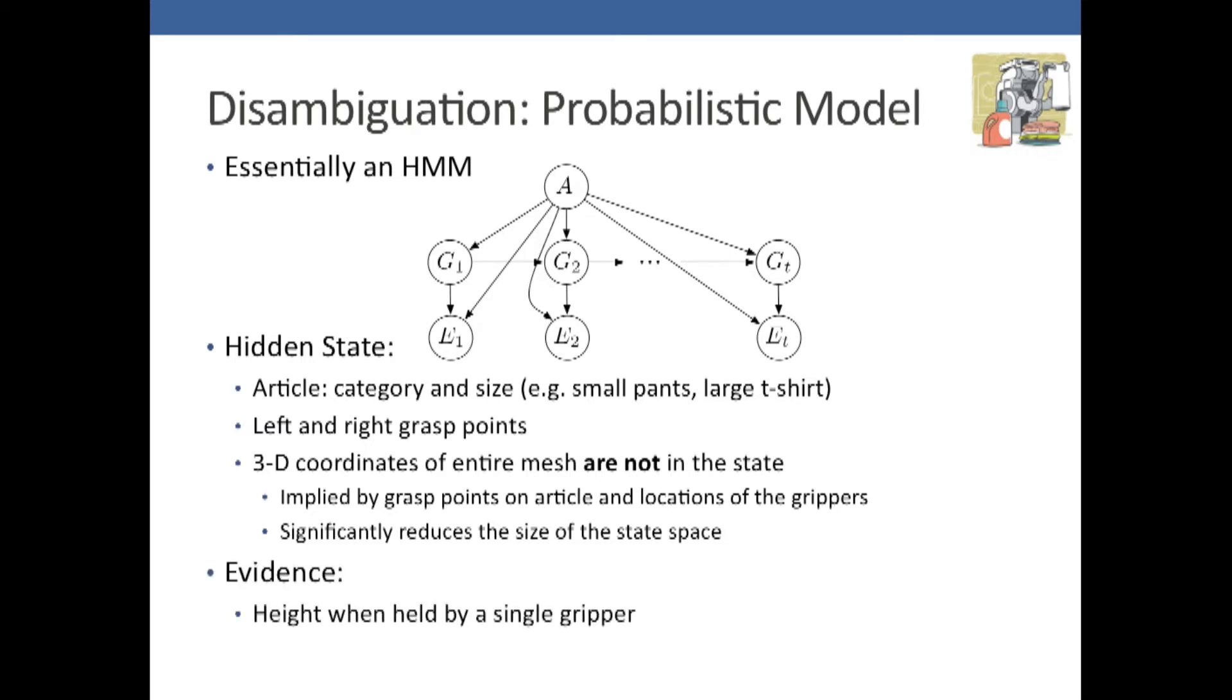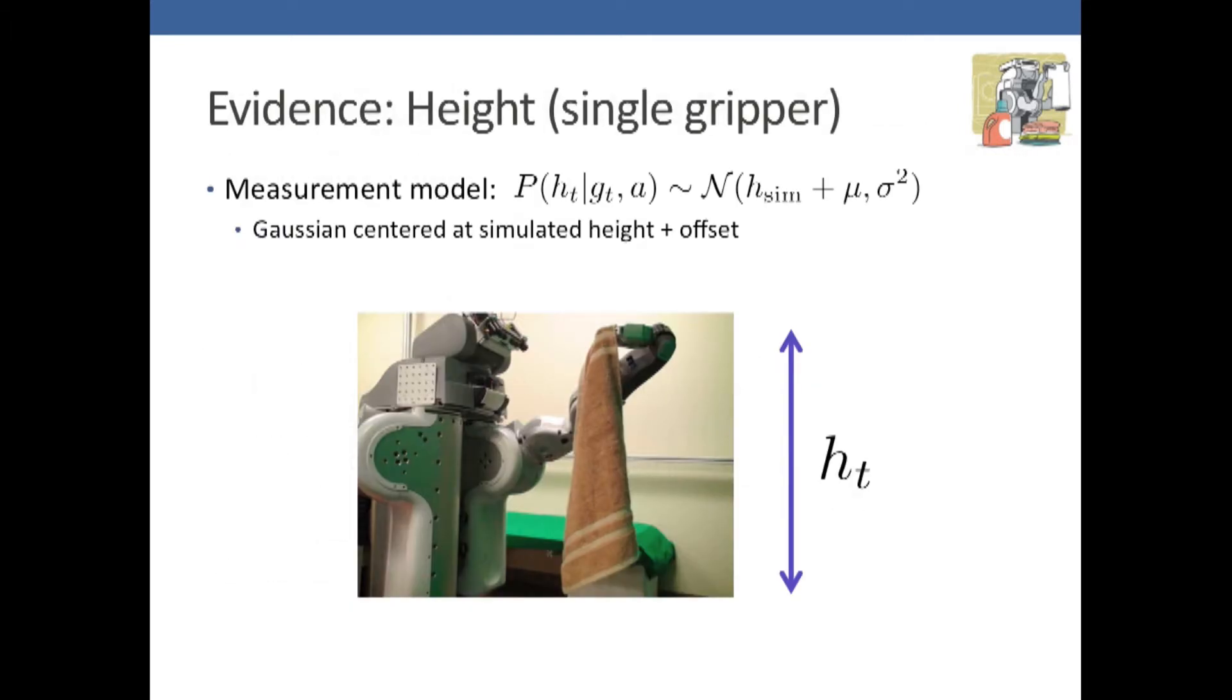The evidence depends on how the robot is holding the cloth. If the robot has the cloth by one gripper, we extract the height. If the robot has the cloth by two grippers, we extract the contour. Here you see the robot holding a towel by one gripper, so the evidence is just the height. The measurement model for this observation is a Gaussian centered at the simulated height plus some offsets.